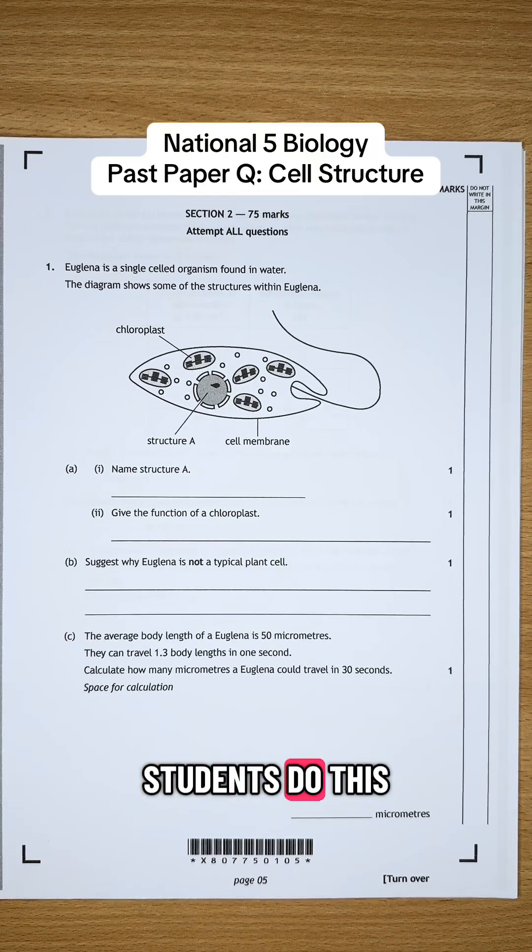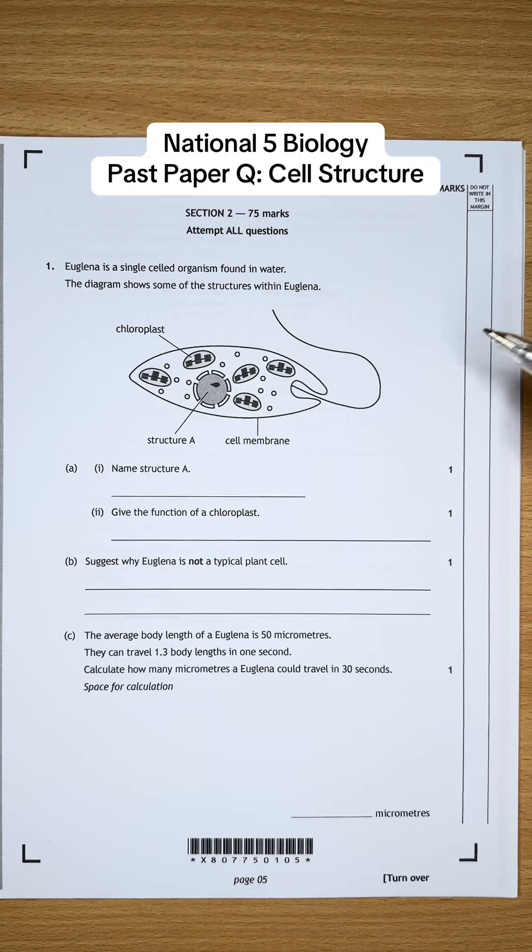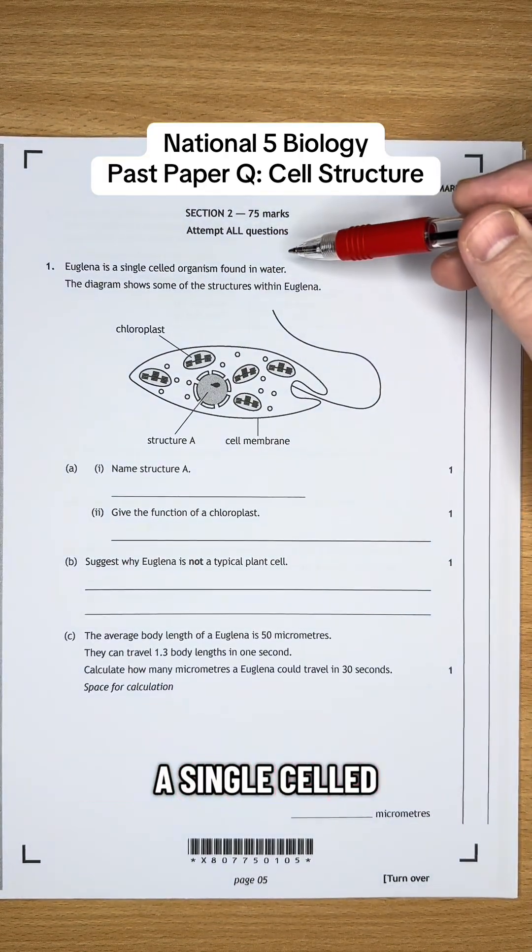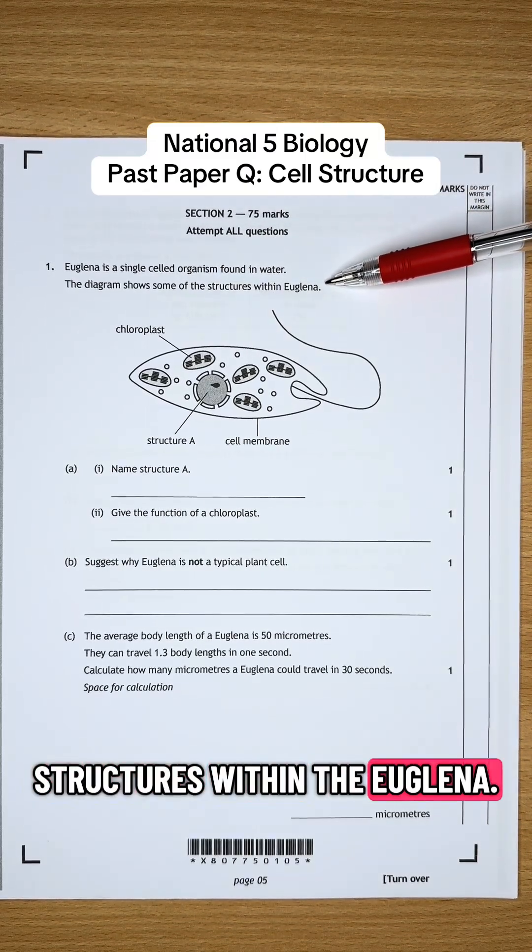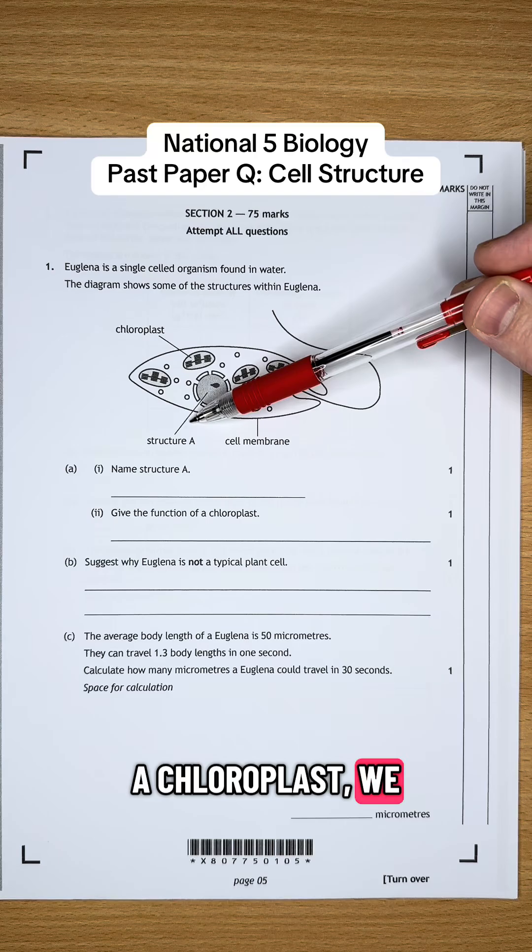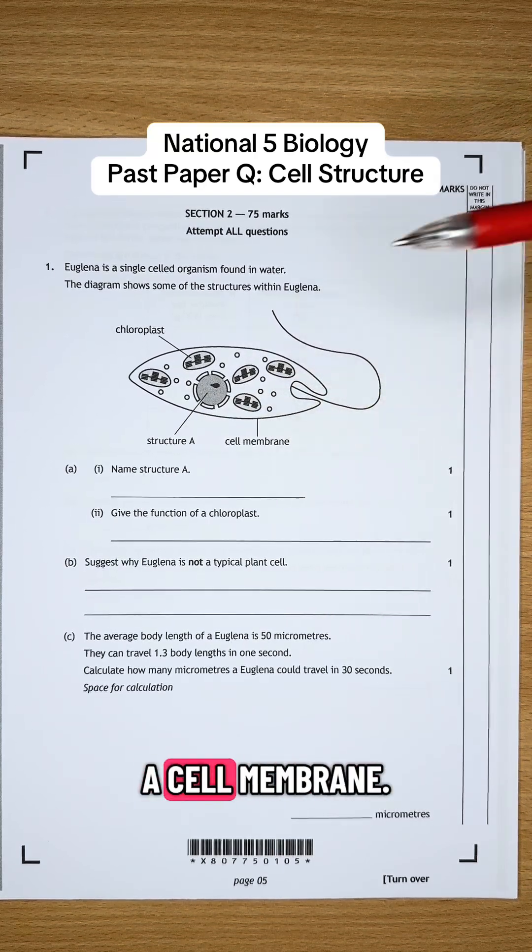National 5 Biology students, do this past paper question with me. This first one says, Euglena is a single-celled organism found in water. The diagram shows some of the structures within the Euglena. So we've got a chloroplast, we've got this structure A, and we've got a cell membrane.